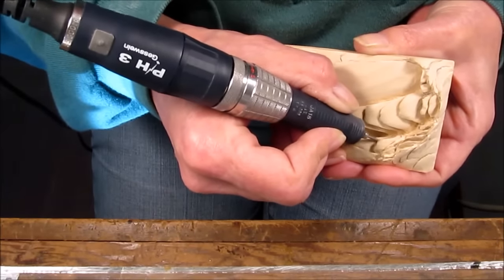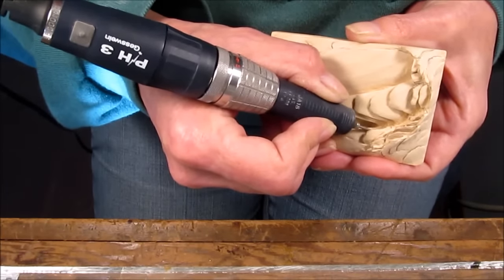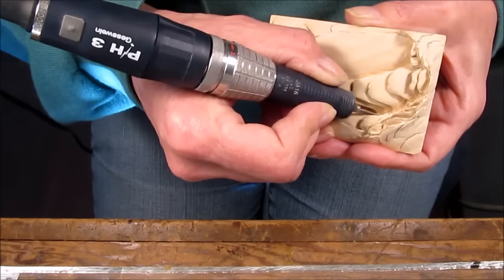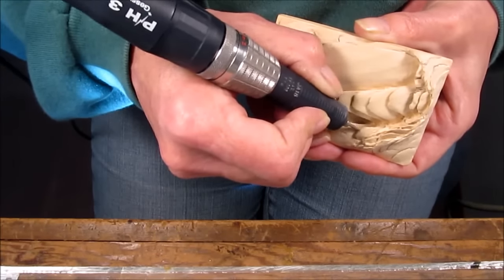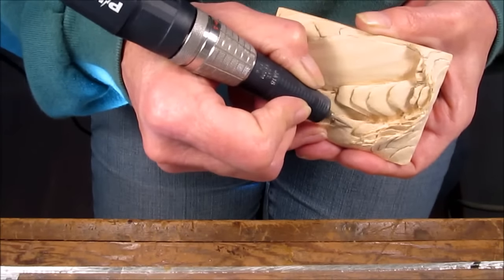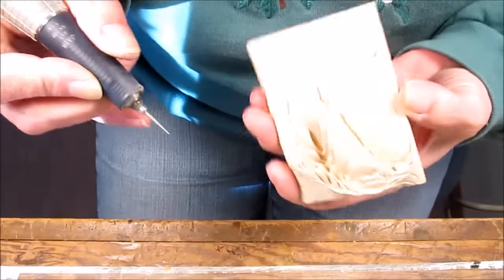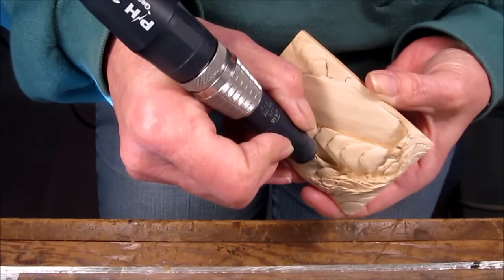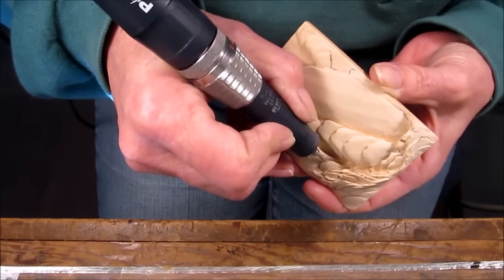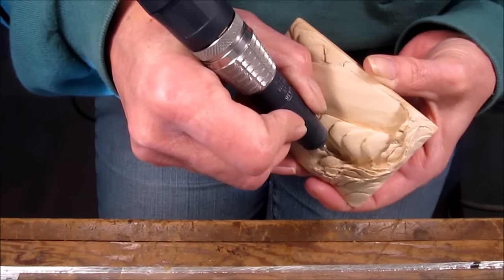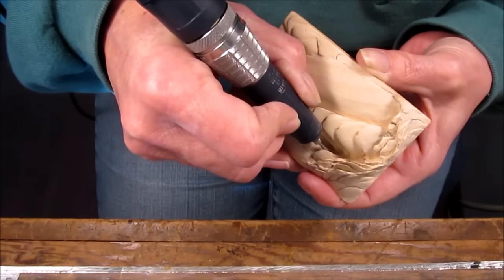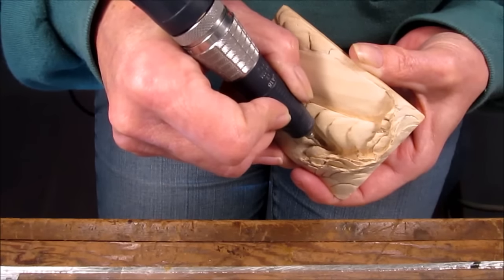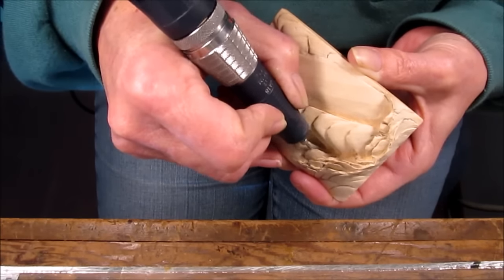I'll take it as far as I can with this pointed diamond to contour the top side of the feather, and then to knock out the wood from underneath I'll use that small sphere diamond.